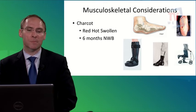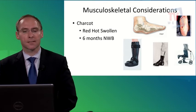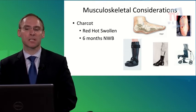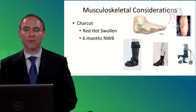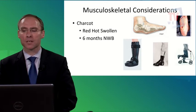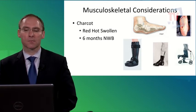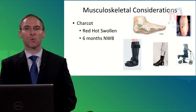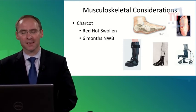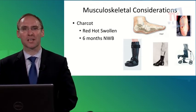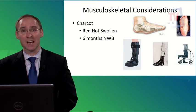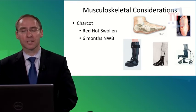The standard treatment for Charcot foot is six months of non-weight bearing. You must stay off the foot for about six months. Options include a knee roller or a crow boot — a large boot that takes pressure off the foot while it heals. There are also surgeries to correct the condition, including shaving off the bottom bump and more extensive reconstructive procedures.